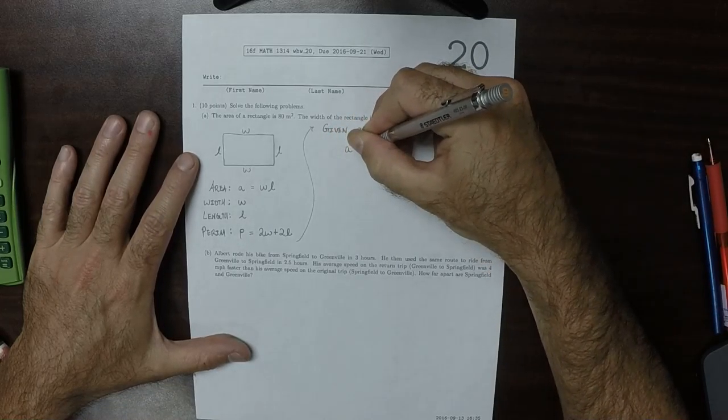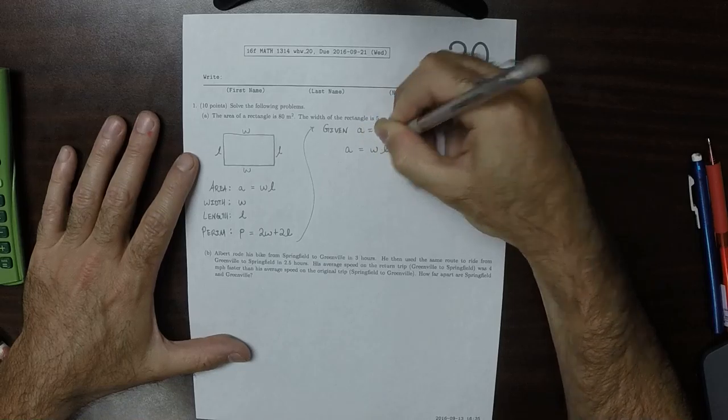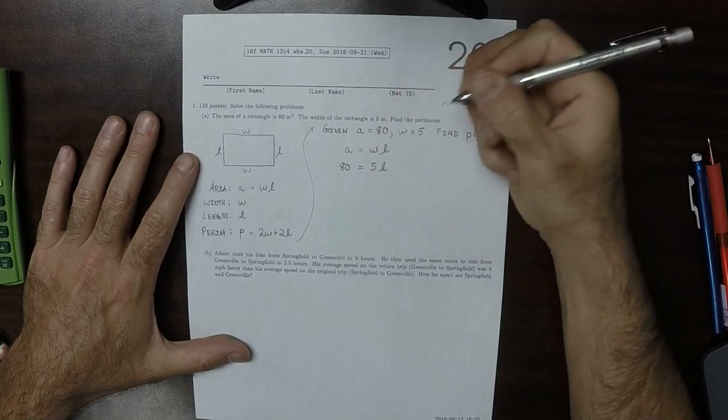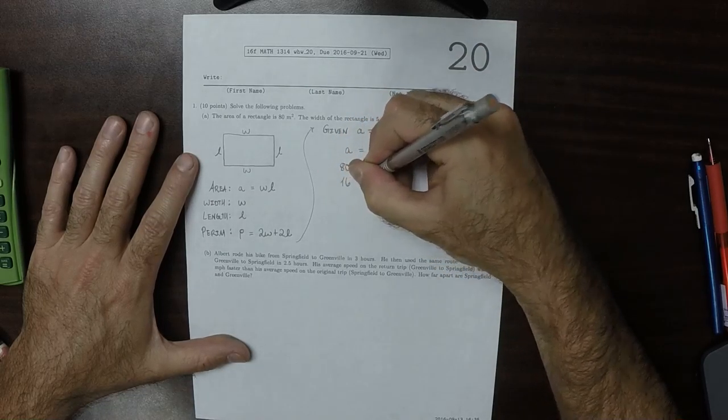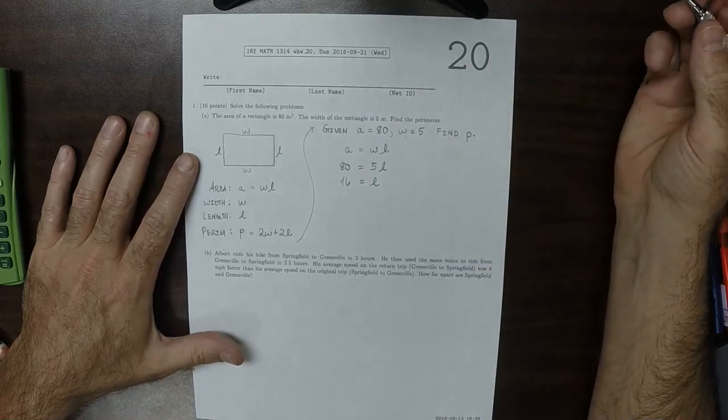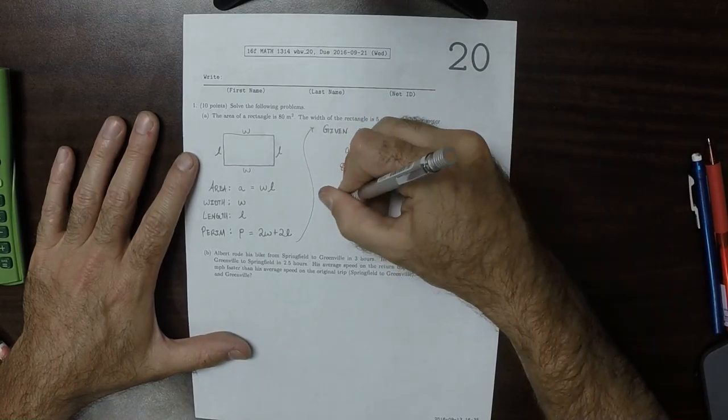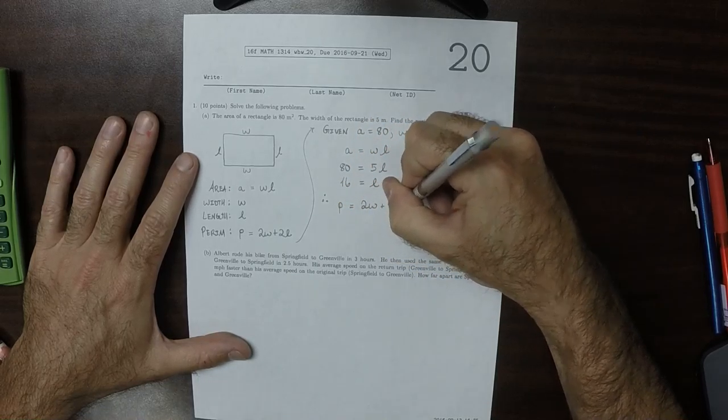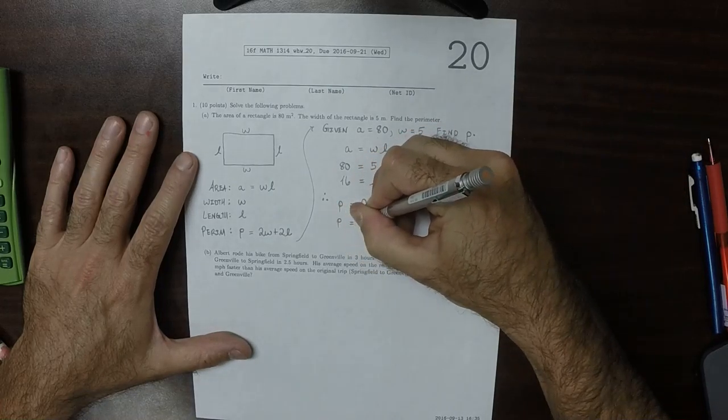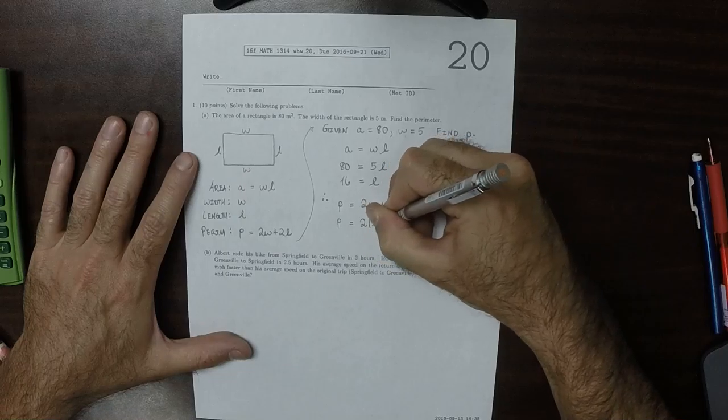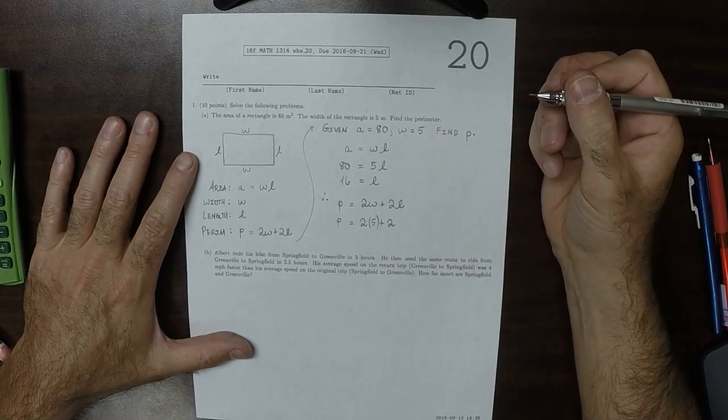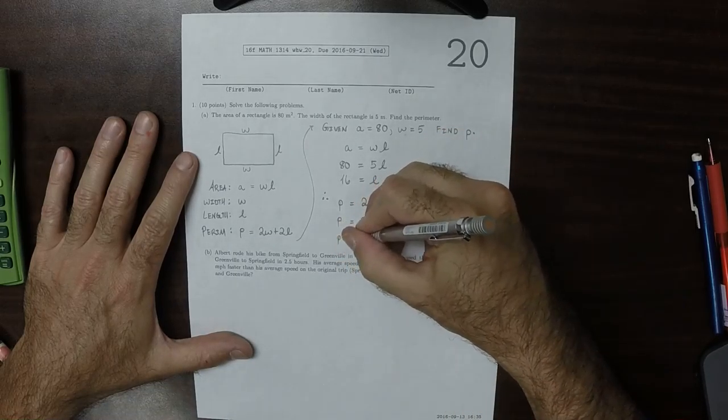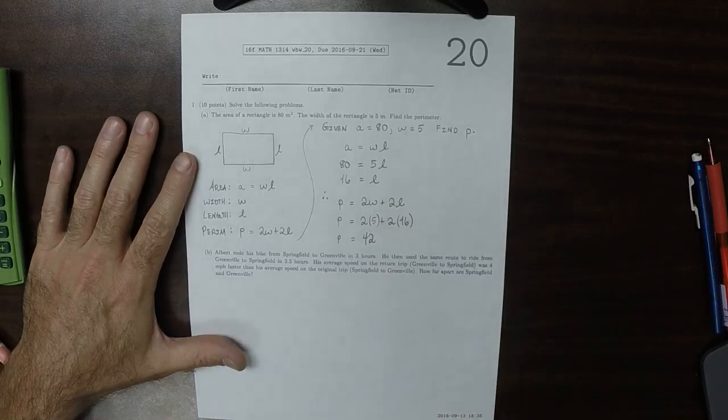So A is WL. So then 80 is 5L. 80 over 5 is 16 equal to L. So now we have L, and therefore the perimeter is 2W plus 2L. So the perimeter is 2 times 5 plus 2 times 16, that's 10 plus 32. So the perimeter is 42.